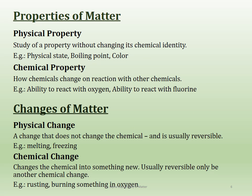The properties of matter are of two kinds: physical properties and chemical properties. In physical properties you study the property without changing the chemical identity of the substance — for example, melting, boiling, color, electrical conductivity, or heat conduction. In chemical properties, you study how a chemical changes when it reacts with other chemicals, such as burning it in oxygen or treating it with chlorine.